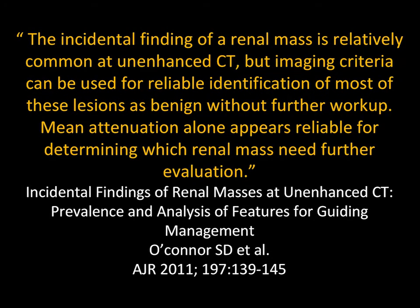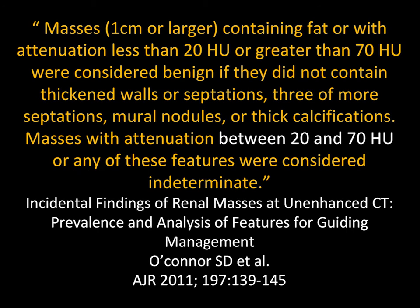O'Connor noted that the incidental finding of a renal mass is relatively common on unenhanced CT, but imaging criteria can be used for reliable identification. Mean attenuation alone appears reliable for determining which renal masses need further evaluation. A mass over 1cm with fat or less than 20 attenuation or over 70 was considered benign if it had no thickened wall, septations, or mural nodule. Between 20 and 70 was the danger zone — something measuring 40 Hounsfield units non-contrast, or even 40-50 with contrast, is a zone of concern.